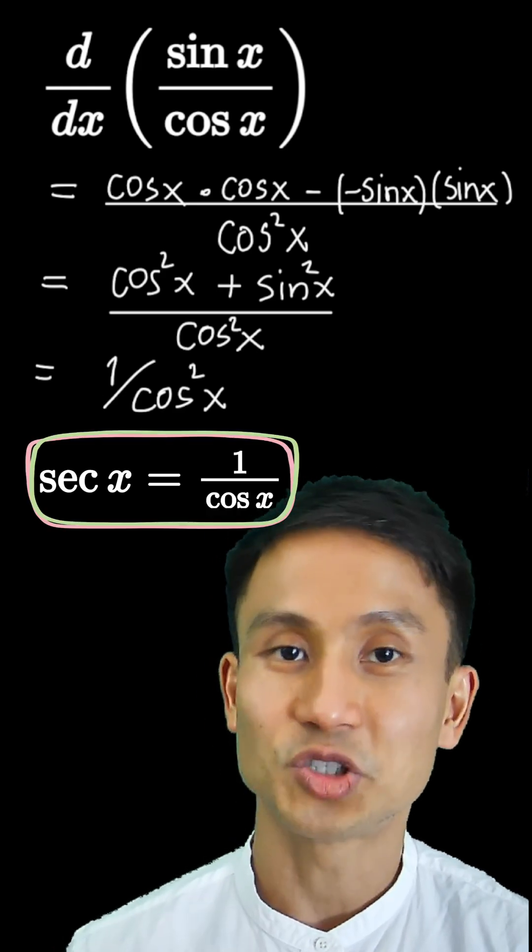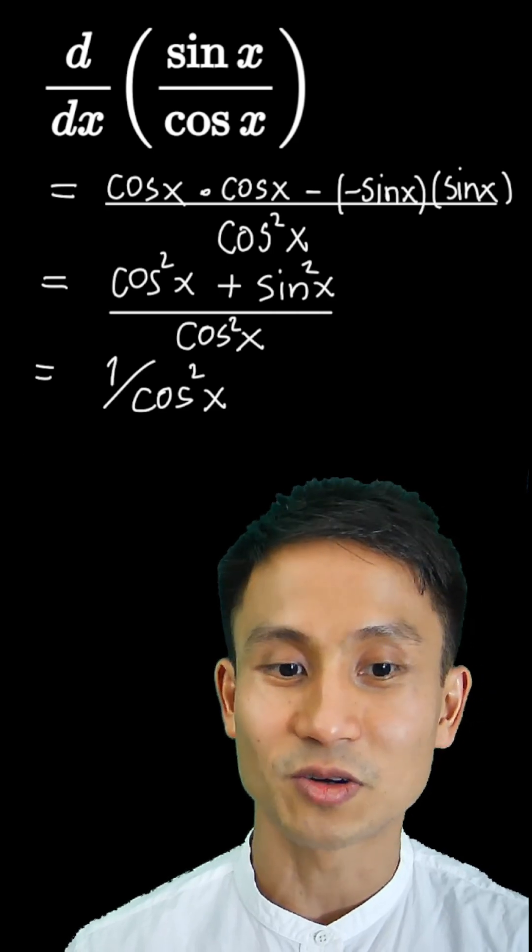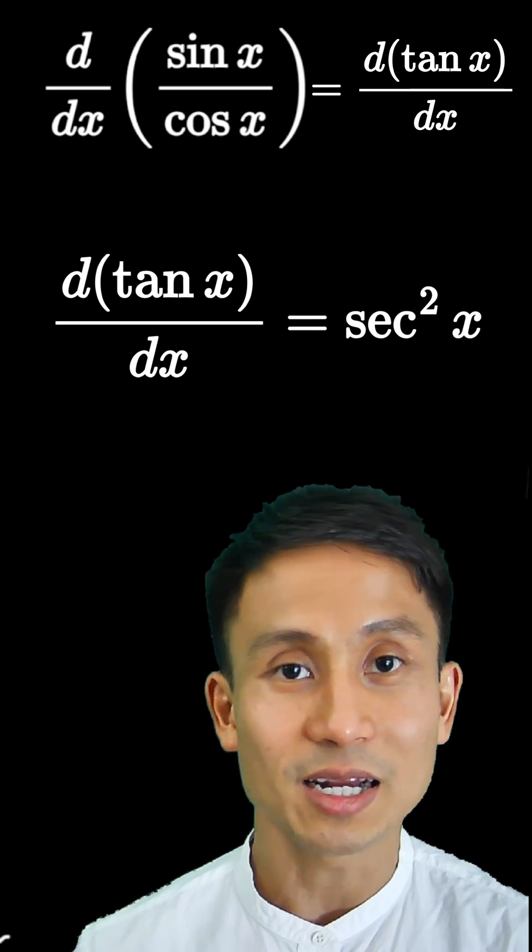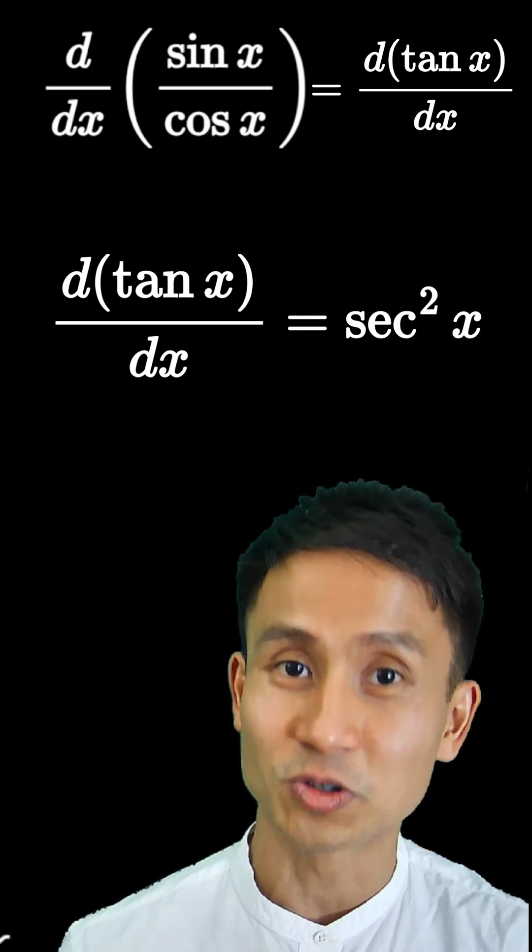One over cos is just called sec x. So here we have the square of one over cos, that means this is gonna be sec squared x. And that is why there is a formula: when you differentiate tan you get sec squared x. We just proved it just by using the quotient rule there.